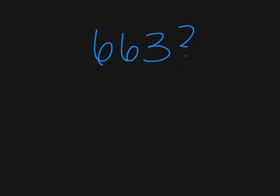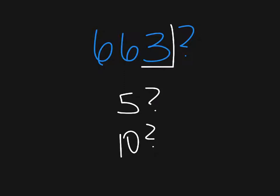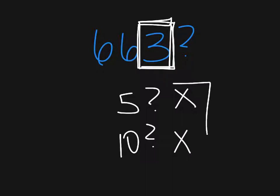Taking a look at 663 — is it divisible by 5? Is it divisible by 10? For the rule for 5, the number in the ones place has to be a 5 or a 0. That's not the case here, so it's not divisible by 5. And for the rule for 10, it has to end in a 0 — that 3 is not a 0. So in this case, neither 5 nor 10 would go into 663.